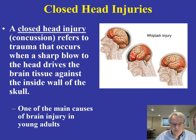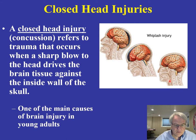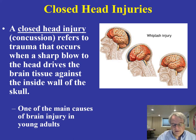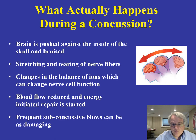Closed head injuries — what we call concussions. This figure illustrates very well what happens in terms of a whiplash kind of injury, where there's a sharp blow to the head that drives brain tissue against the inside wall of the skull. This is one of the main causes of brain injury we see in young adults — the rattling of brain tissue up against the inside wall of the skull.